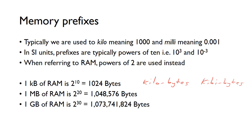So let's be aware of this - the 'bi' here is telling us that it's binary, so powers of 2. This would be mebibytes and gibibytes.